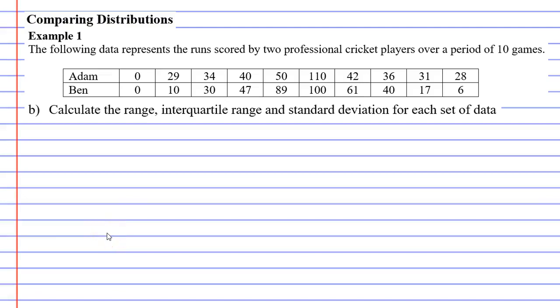Alright, for this video we're going to complete an example again and we're going to talk about the advantages and disadvantages of range, interquartile range and standard deviation as well. The following data represents the runs scored by two professional cricket players over a period of 10 games. This is the same data as in the previous video.